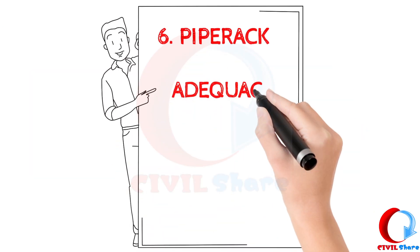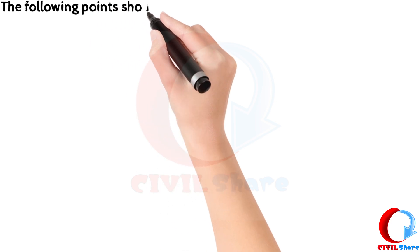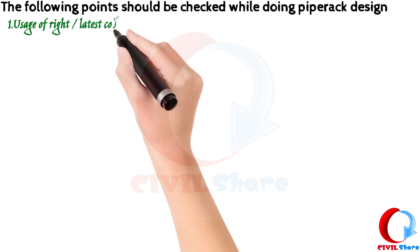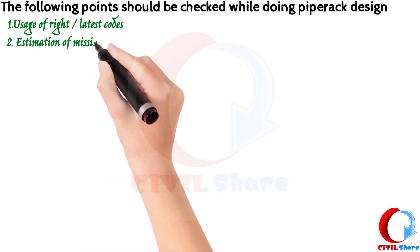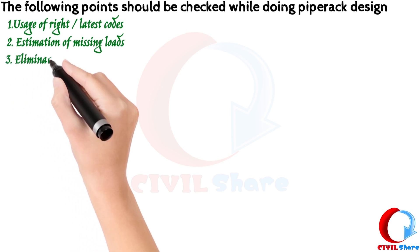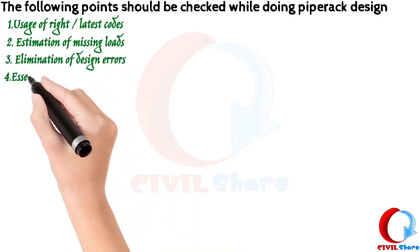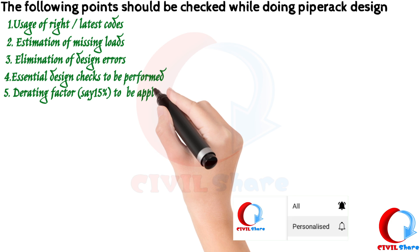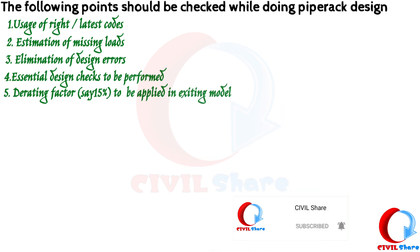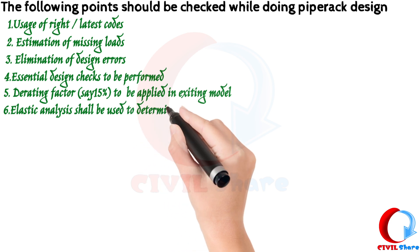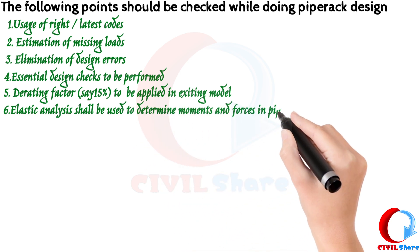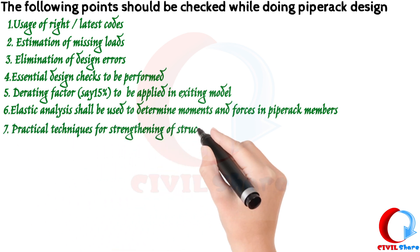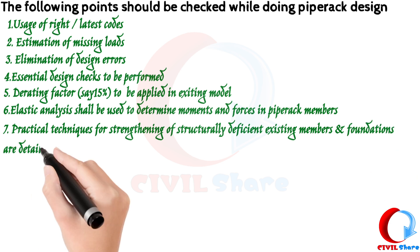The pipe rack adequacy check: The following points should be checked while doing pipe rack design. 1. Usage of right, latest codes. 2. Estimation of missing loads. 3. Elimination of design errors. 4. Essential design checks to be performed. 5. De-rating factor, say 15%, to be applied in the existing model. 6. Elastic analysis shall be used to determine moments and forces in pipe rack members. 7. Practical techniques for strengthening of structurally deficient existing members and foundations are detailed with neat sketches.